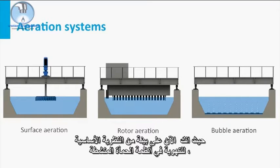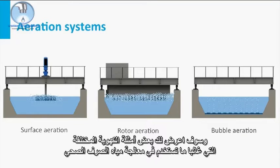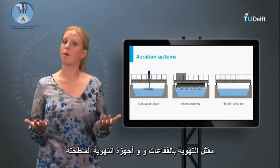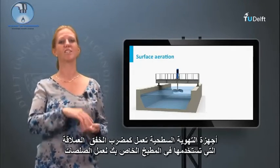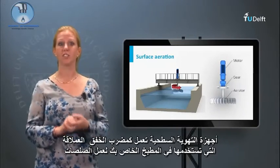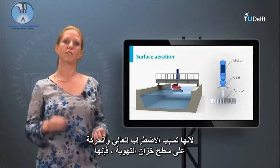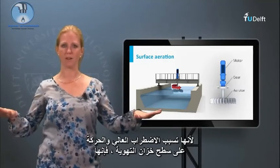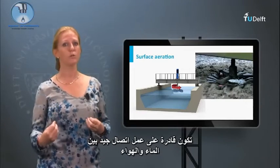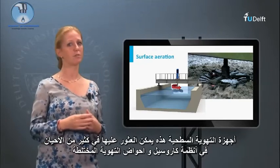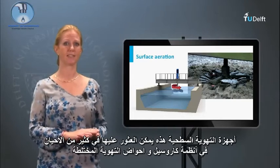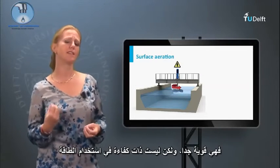Now aware of the basic theory on aeration of activated sludge systems, we will look at examples of different aerators often used in sewage treatment: bubble aeration and surface aerators. Surface aerators function as giant whisks, causing high turbulence and motion at the surface of the aeration tank, generating good contact between water and air. These surface aerators can often be found in carousel systems and mixed aeration tanks. They are very robust, but not that energy efficient.